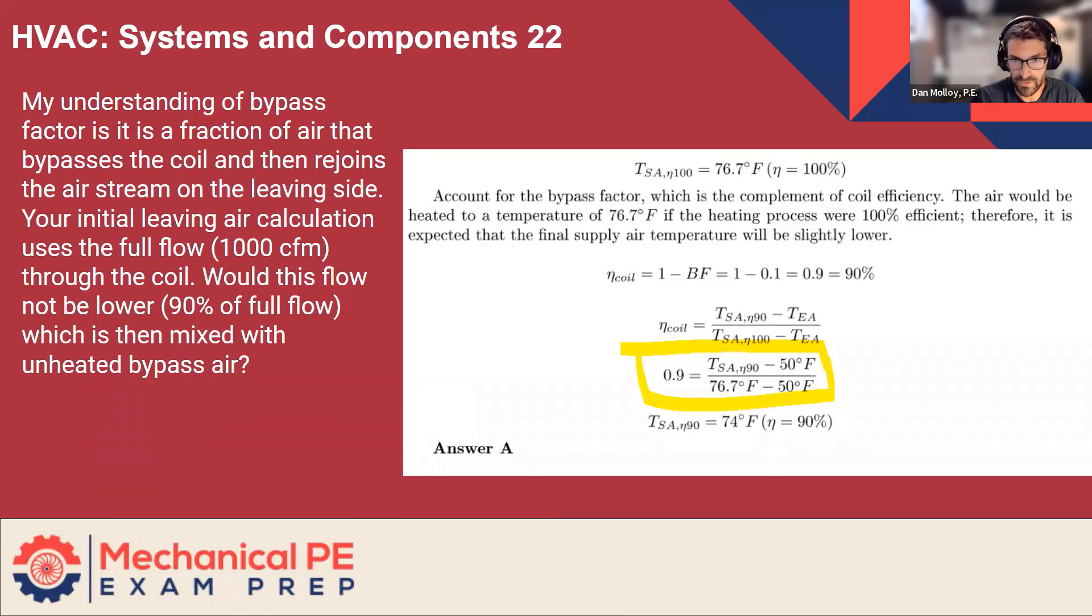Your initial leaving air calculation uses the full flow, 1000 CFM, through the coil. Would this flow not be lower, 90% of full flow, which is then mixed with the unheated bypass air?